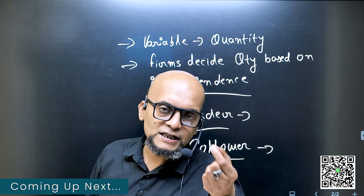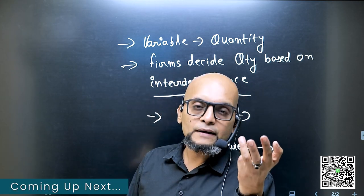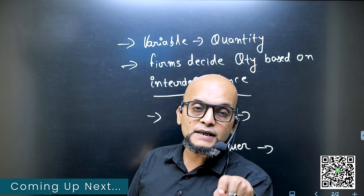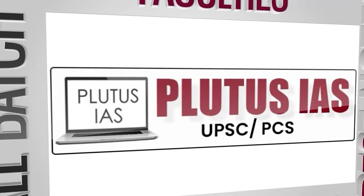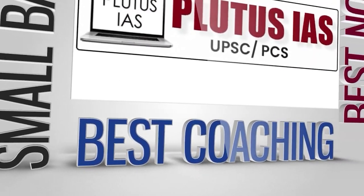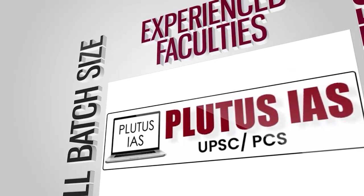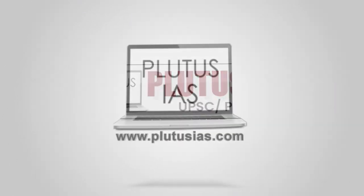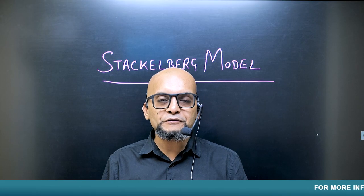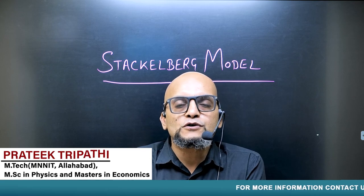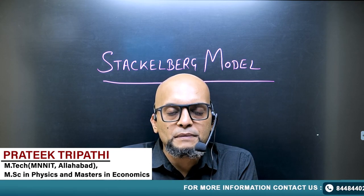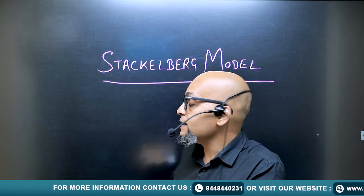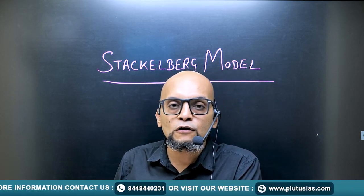Leader means that firm which is more experienced, more big, who will do whatever decision in the market — the follower will copy the follower. Hello everyone, welcome to Plutus IAS. So guys, we are going to discuss the Stackelberg model of Duopoly.